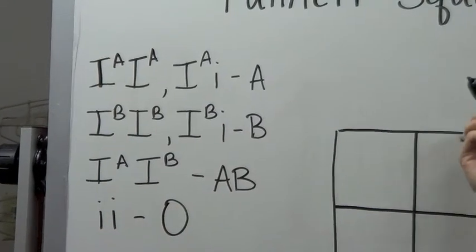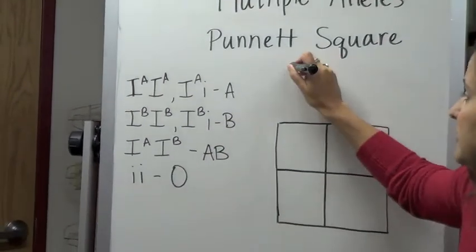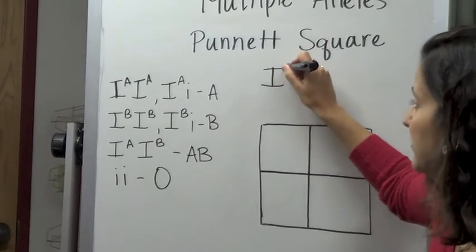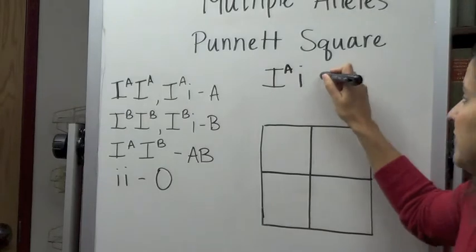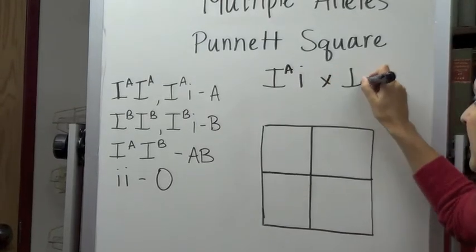Today, just to make it as hard as possible, I'm going to do a combination of somebody who is heterozygous and has type A blood with someone who is heterozygous and has type B blood.